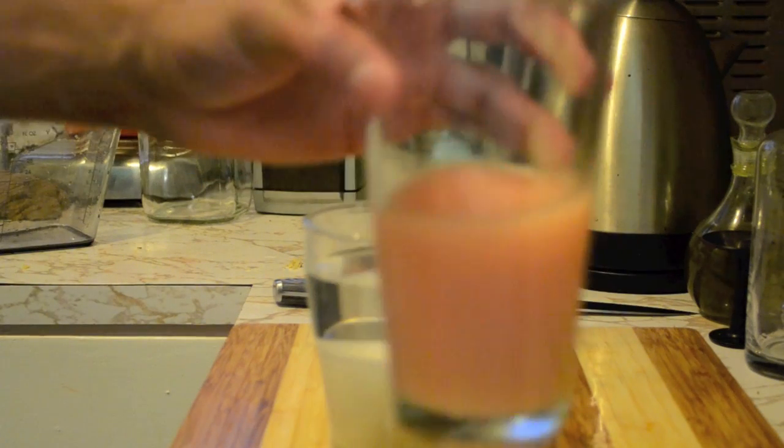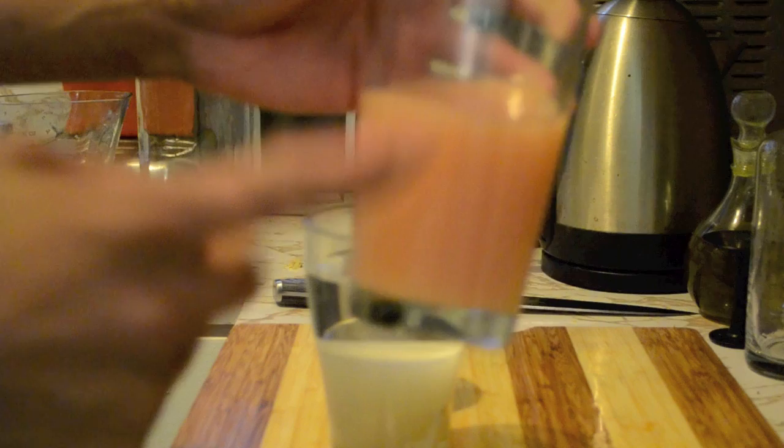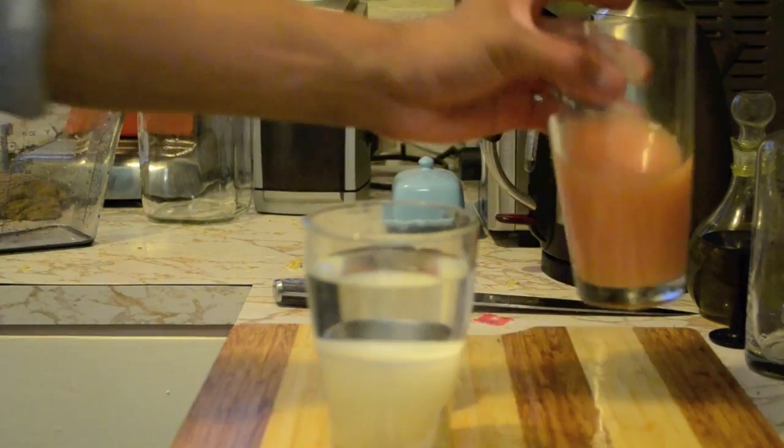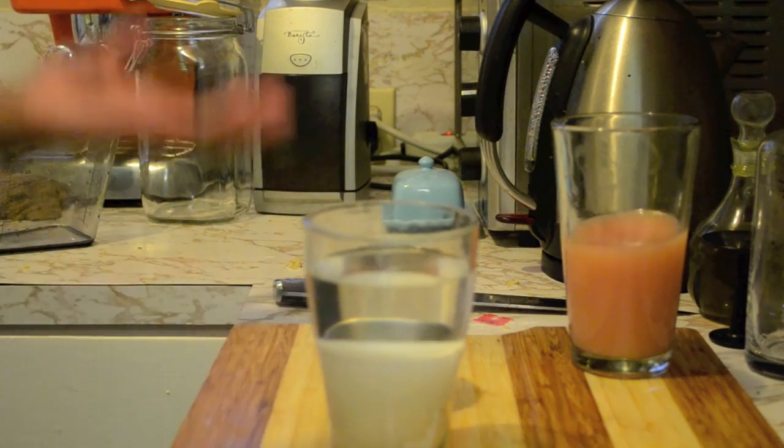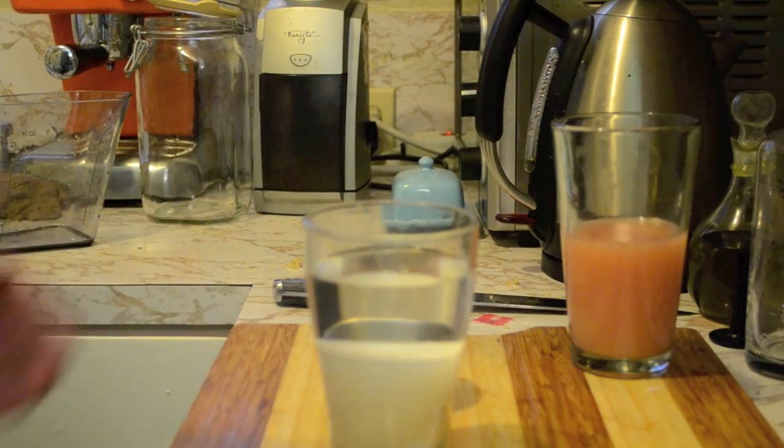So you see that nice ruby red color? That's not what your ginger beer is gonna look like. What we're gonna do is add six ounces of simple syrup. That's just equal parts sugar and water.